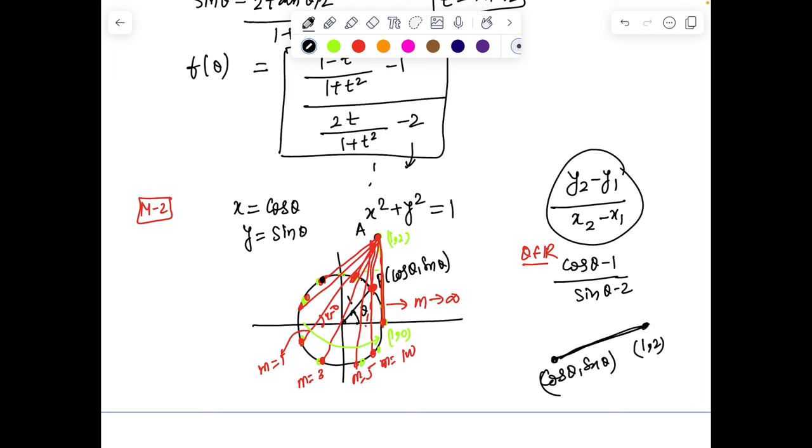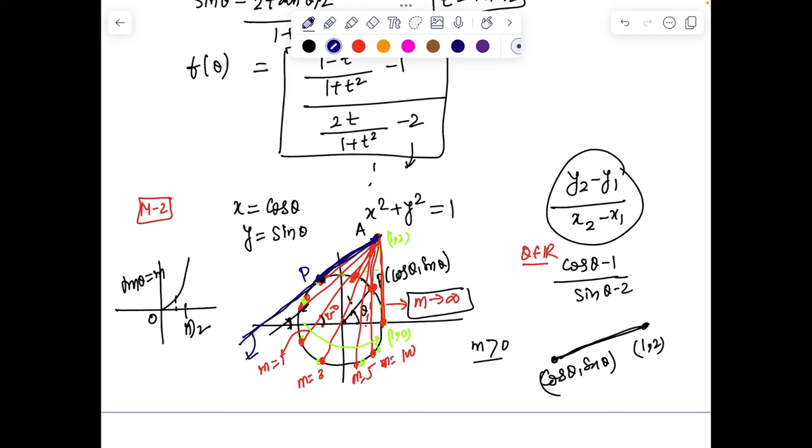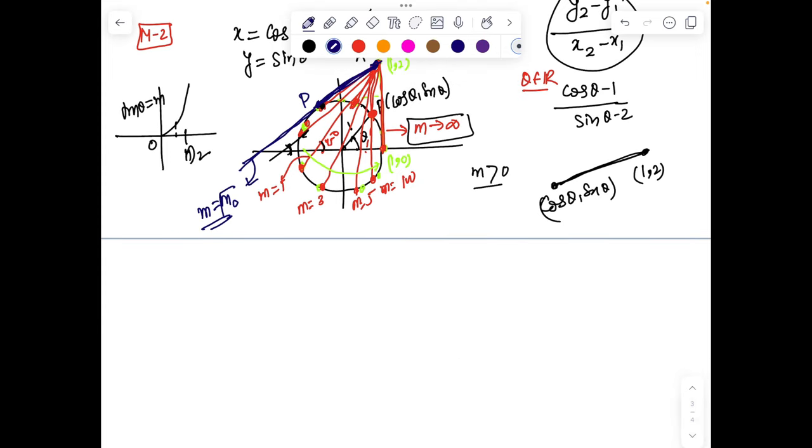The question is: what is the minimum value of slope? Maximum is tending to infinity. These slopes are positive because they make acute angle with the x-axis, so m > 0. The minimum value corresponds to minimum angle θ because slope is tan θ in the window 0 to π/2. If m is less, then θ must be less. The least value of θ comes when the line joining A and P is tangent to the circle, giving m = m₀.